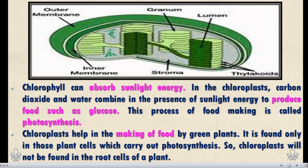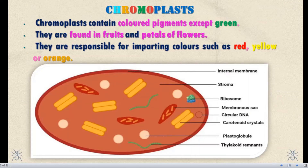Next, Chromoplast. Chromoplast contains colored pigment except green. They are found in fruits and petals of flowers. Chromoplasts are responsible for imparting colors such as red, yellow, and orange to fruits and flowers.